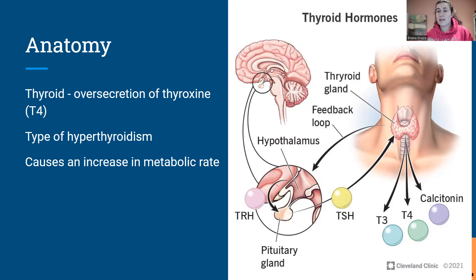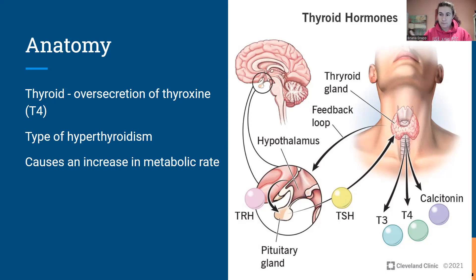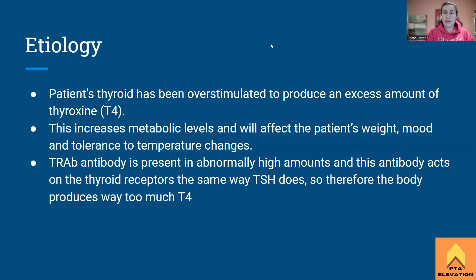If we have an overactive thyroid, our metabolic rate is shooting through the roof, because that is what thyroid hormones are responsible for. Specifically, thyroxine is responsible for increasing our metabolic rate, speeding up our heart rate, and speeding up the way that we break down molecules in our body. That's what's going on — the thyroid is doing too much.